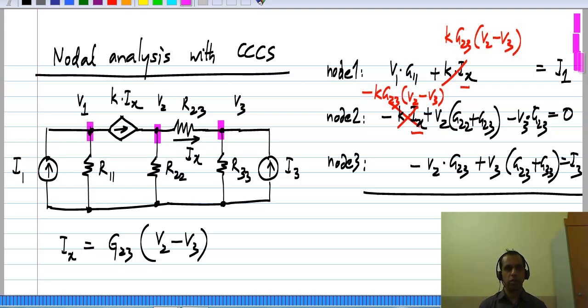As with the current controlled voltage source, one complication I have not considered is when the controlling current, instead of being here, is through some voltage source. You would not be able to write an equation like that because the current through a voltage source is determined by other things in the circuit, not by the voltage source itself.